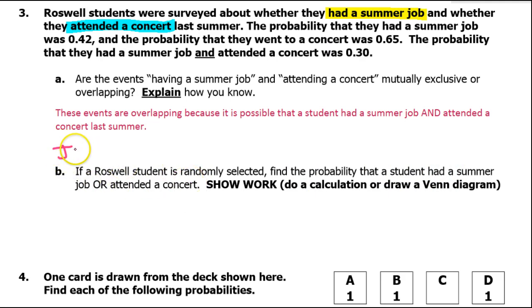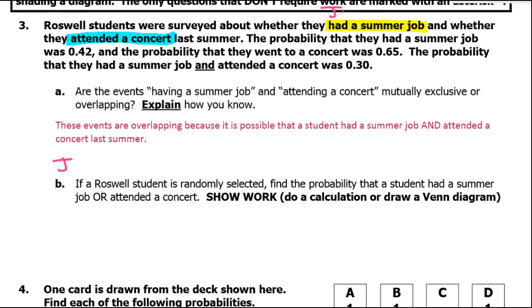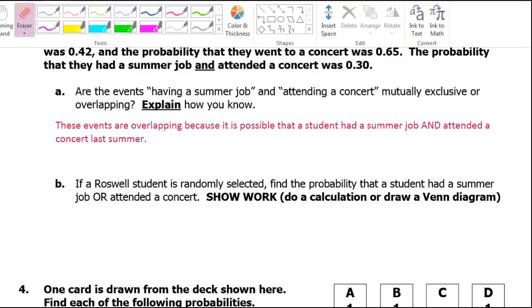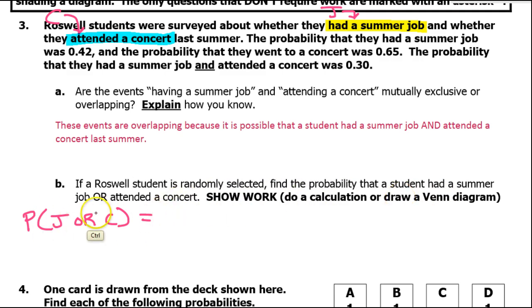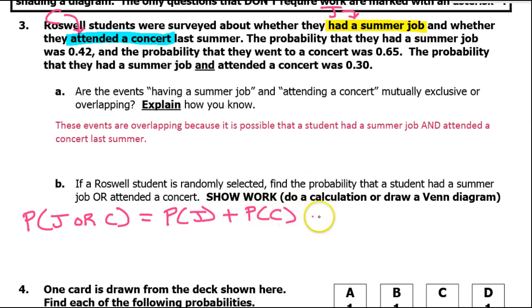We'll let J represent 'had a summer job' and set C be 'attended a concert.' So with that in mind, we are being asked to calculate the probability of J or C. We have two choices: we can either draw a Venn diagram or we can do the following calculation. We know a formula — the probability of J or C is the probability of J plus the probability of C minus the probability of J and C.